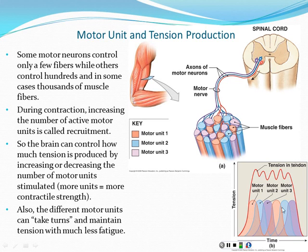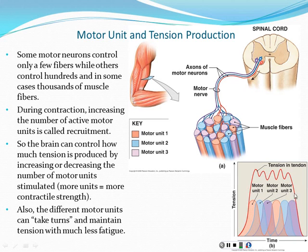In this graph, motor unit one and motor unit two are both active at the same time, so the tension in the muscle is doubled. Then we see them taking turns to maintain that tension.